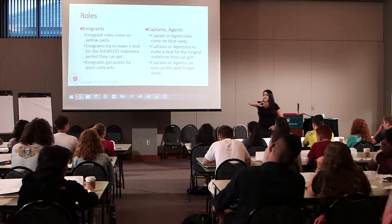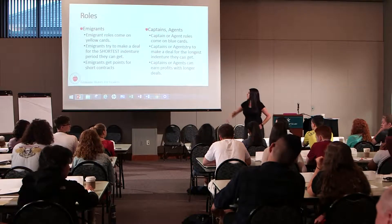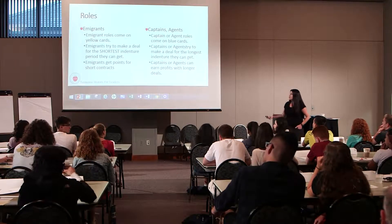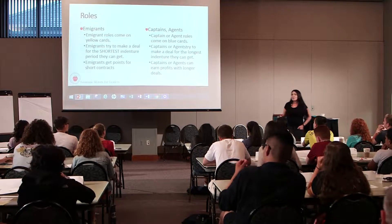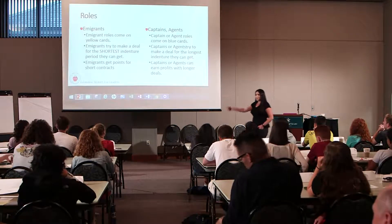In this activity, some students are going to be emigrants — those are the students with yellow cards, everybody on this half of the room. Split the class in half, giving half the students blue agent cards and the other half yellow emigrant cards. Agents are trying to recruit indentured servants for colonists wanting labor, while emigrants are Europeans considering the possibility of going to the colonies.